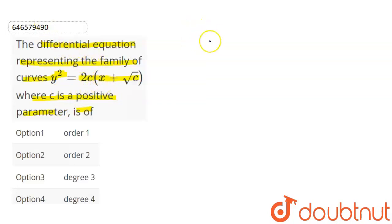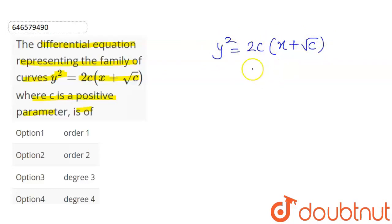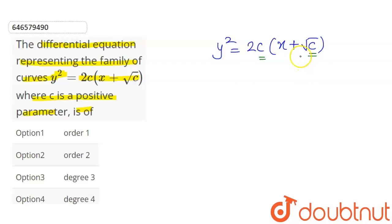You have been given the family of curves y² = 2cx + √c, where c is an arbitrary constant. When we form a differential equation, we look at the number of arbitrary constants. Here, the number of arbitrary constants is only one — c. So we need to differentiate one time.